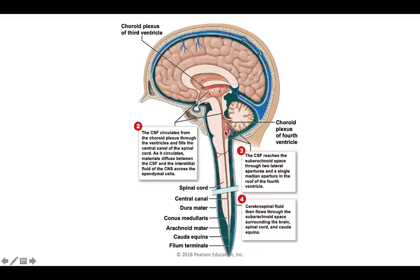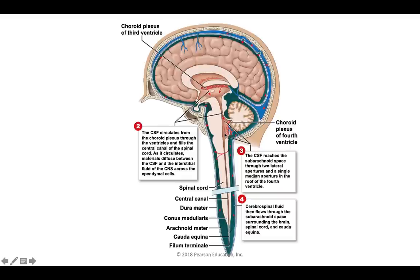From the fourth ventricle, cerebrospinal fluid leaves through openings called apertures into the subarachnoid space — the layer between the pia mater and the arachnoid mater. Once in the subarachnoid space, it flows all the way around the spinal cord and around the brain, bathing the tissue, transporting nutrients, and carrying away waste products. It also leaves the fourth ventricle into the central canal of the spinal cord.